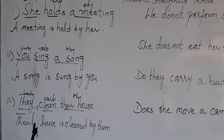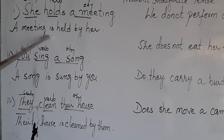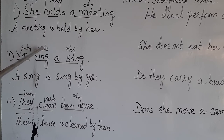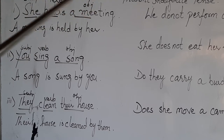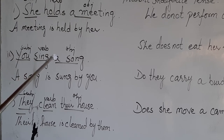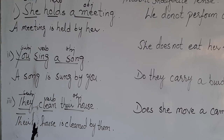The students who know the tenses can actually change sentences into passive voice correctly. When you know the tenses - whether it is present tense, past tense, or future tense - you can use the correct helping verb in passive voice. You need to know whether to use 'is', 'was', 'has', or 'have'. Those who know their tenses can do active and passive voices correctly, as well as direct and indirect narration.